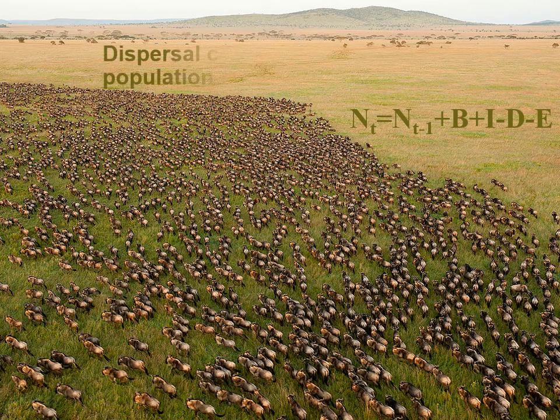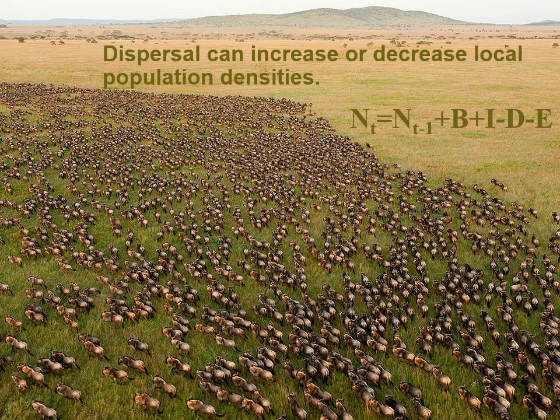Dispersal is really about looking at populations — up until now we've been treating them as a stable entity not moving around. But we know that population densities can go up and down as individuals are born, die, new ones come in, and old ones go out. The number we have is going to be the previous number plus births plus immigrants, minus deaths and minus emigrants.